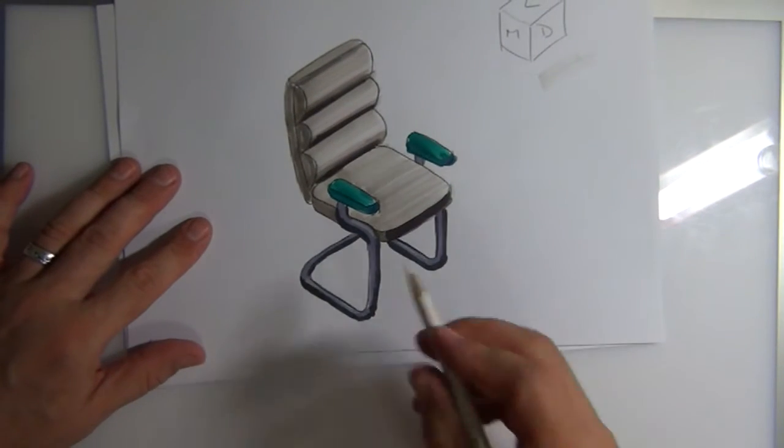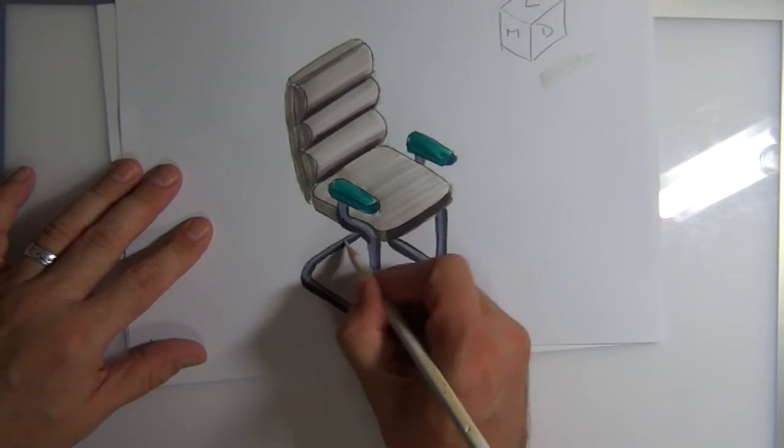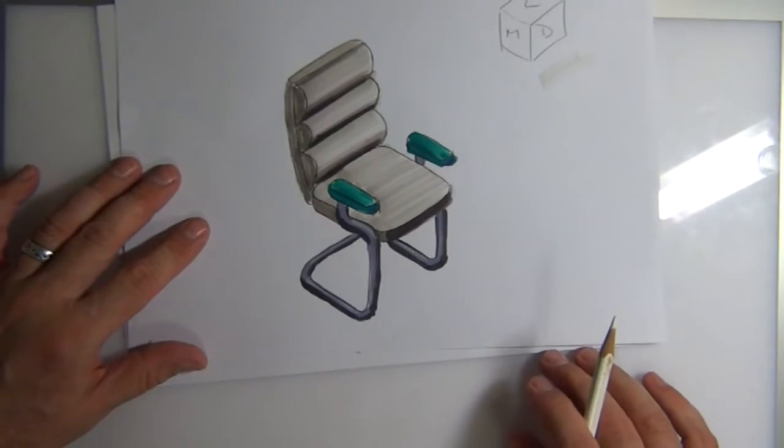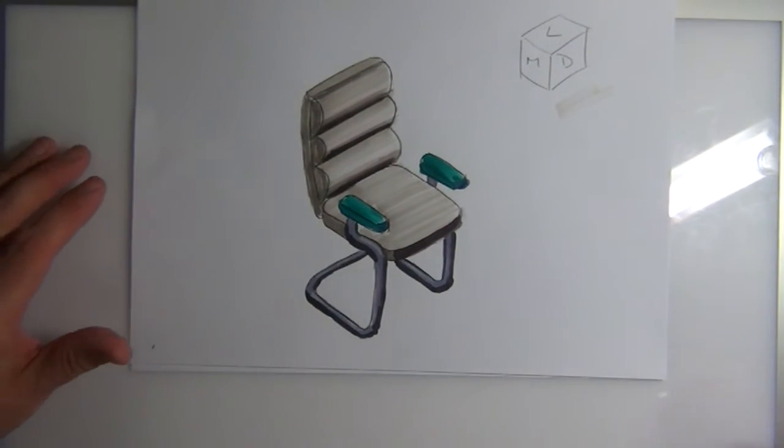So they're kind of like the top surfaces of the metal. Now you would see a little bit there, but the shadow of the chair itself would probably stop it.